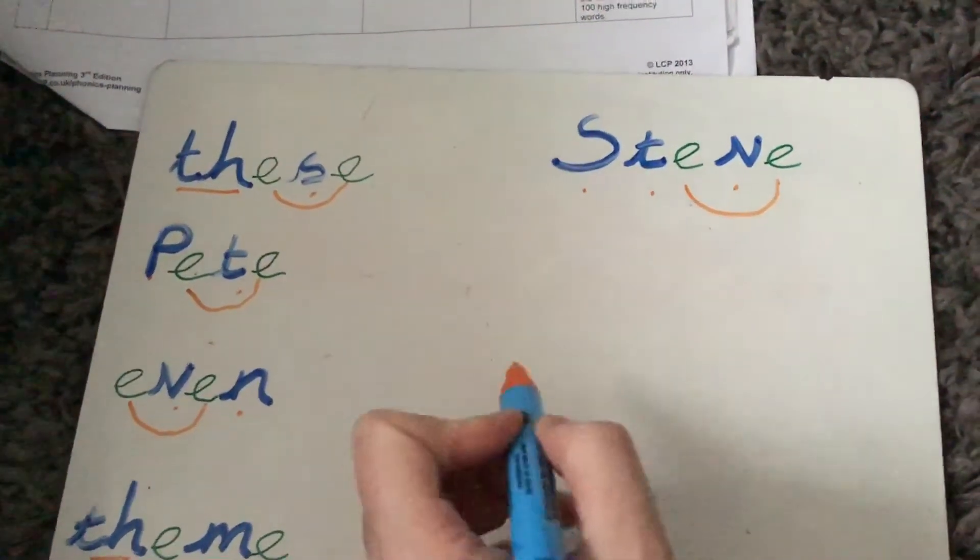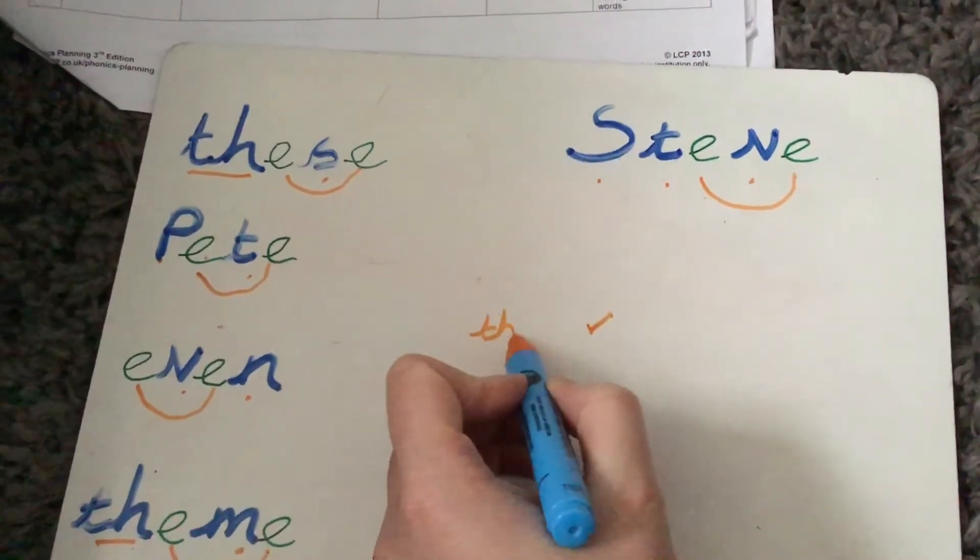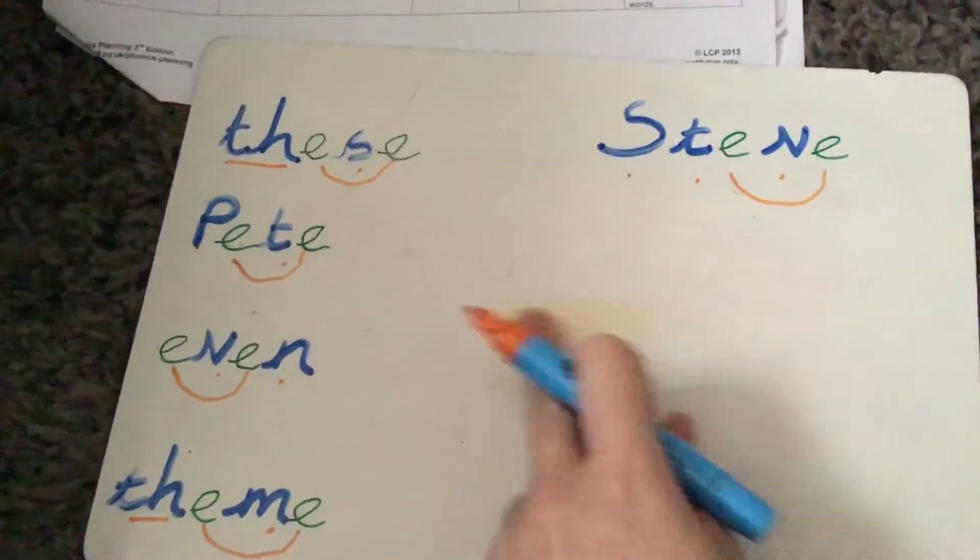Then as you go and find them, you can tick them off because you think, oh yeah, I found the word of these and see if you spelt them correctly. So have a little go. That's just a little game to play.